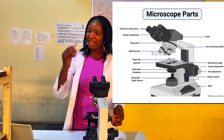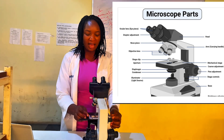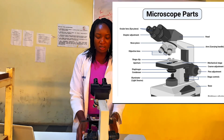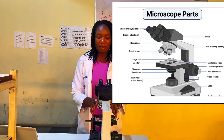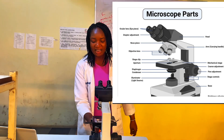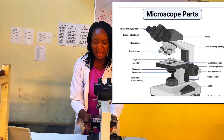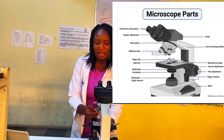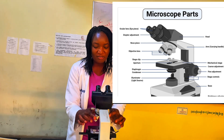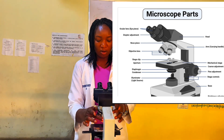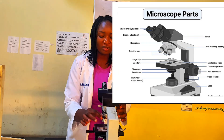This is the stage where the microscopy slide, which I am holding, is fixed. And this is the stage clip that holds the microscopy slide so that it will remain firm and not fall. Now the light from the illuminator passes through the diaphragm and it is focused on the objective lens. There are different objective lenses here — you have the 4x, 10x, 40x, and 100x.